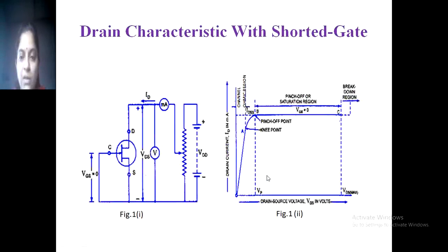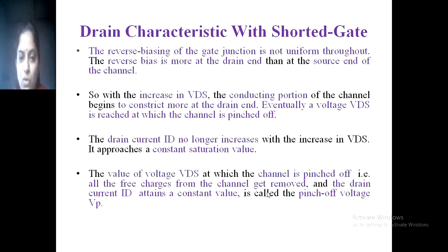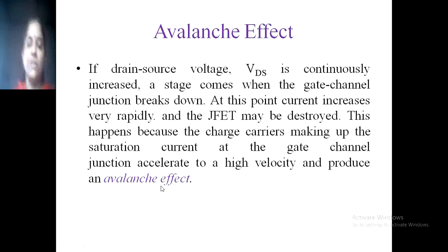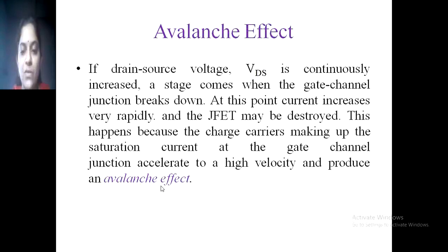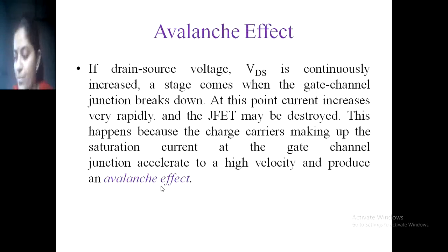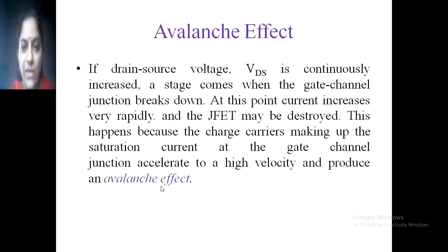In the graph, the last region shown is the breakdown region. If drain-source voltage VDS is continuously increased, a stage comes when the gate-channel junction breaks down. At this point current increases very rapidly and the JFET may be destroyed. This happens because the charge carriers making up the saturation current at the gate-channel junction accelerate to a high velocity and produce an avalanche effect, distorting the transistor. We cannot operate the JFET in the breakdown region.